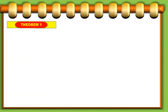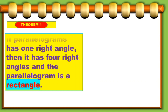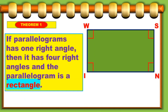And to start with, we have here theorem number 1. It states that if a parallelogram has one right angle, then it has four right angles, and the parallelogram is a rectangle. Just like in our illustration here, so we have four right angles — we have rectangle WINS.